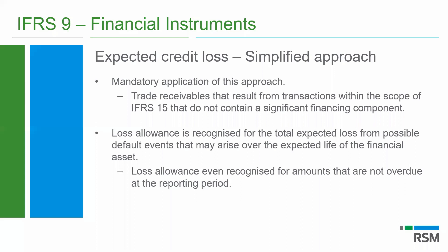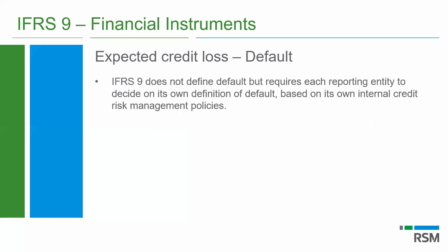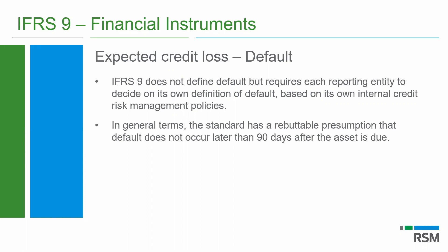What IFRS refers to as default within the expected credit loss model — IFRS 9 does not specifically define what default is, but it does require that an entity decide its own definition of default based on whatever your internal policies are with regards to collecting debts and managing this risk. In general terms, what the standard does give is a rebuttable presumption that default does occur if your debtor is over 90 days past due. At that point, your debtor has gone into default. But the standard does require that management set its own definition of default based on their approach to managing collections.